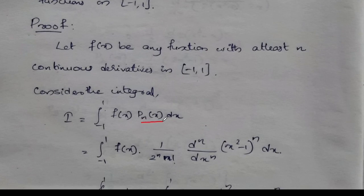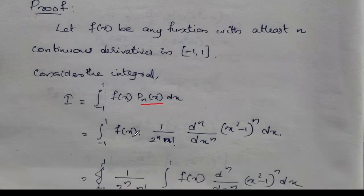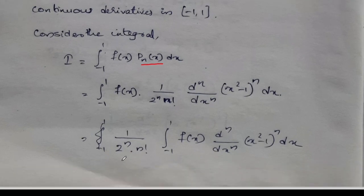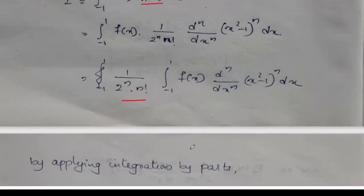We get the integral from minus 1 to 1 of f of x into 1 by 2 raised to n into n factorial, d raised to n by dx raised to n of x squared minus 1 whole raised to n. And in terms of common factors outside of the polynomial, the integral from minus 1 to 1 of f of x into d raised to n by dx raised to n of x squared minus 1 whole raised to n dx.